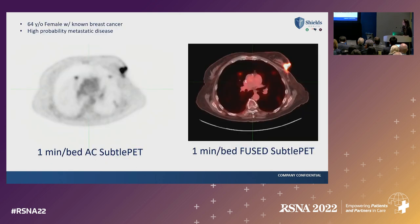This is a 64-year-old female with known breast cancer and high probability of metastatic disease. Utilizing SubtlePET at one minute per bed, we were able to detect a seven-millimeter and a ten-millimeter nodule in the lungs, answering the question: is there metastatic disease?